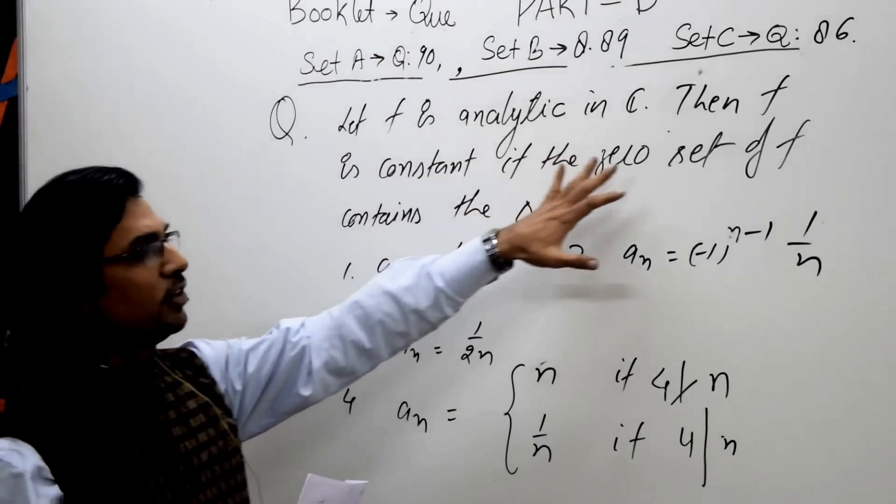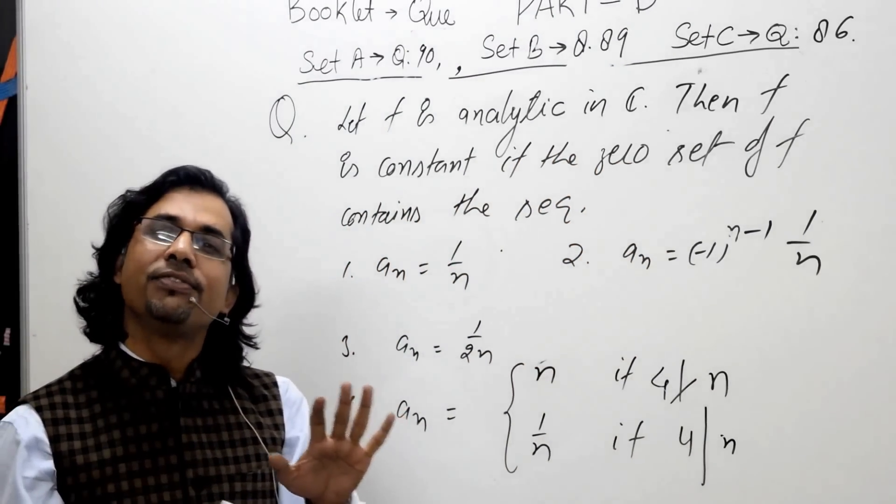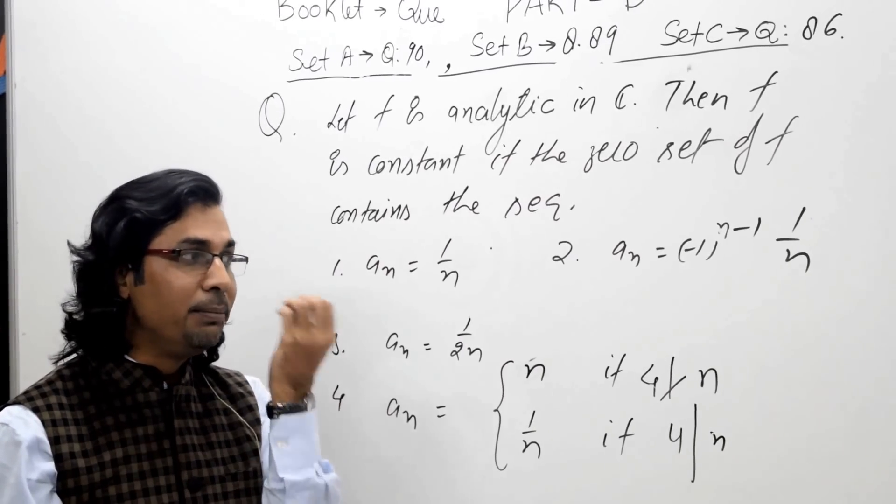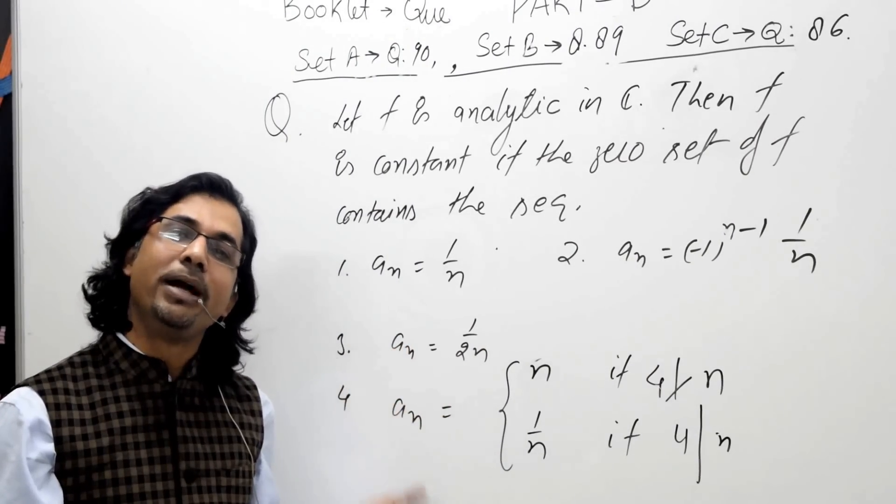So this question asks: if any of the sequences a_n is 0, can we claim the function is constant? What remains is to find out whether these sequences have limit points or not.